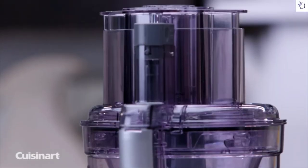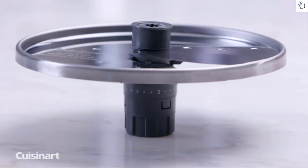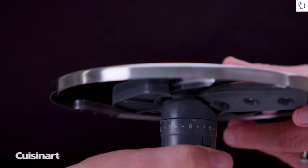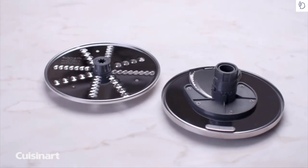The Supreme wide-mouth feed tube accommodates whole fruits and vegetables. The adjustable slicing disc goes from thin at 1 millimeter and ranges up to extra thick at 7 millimeters. And the reversible shredding disc shreds veggies from fine to medium consistency.